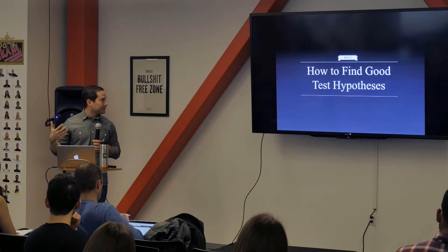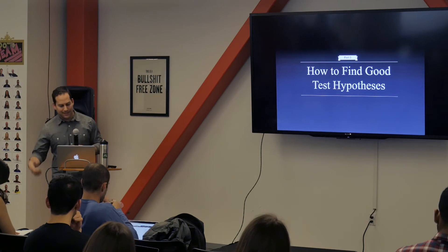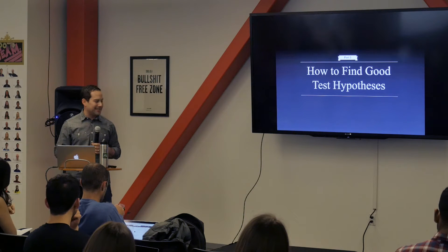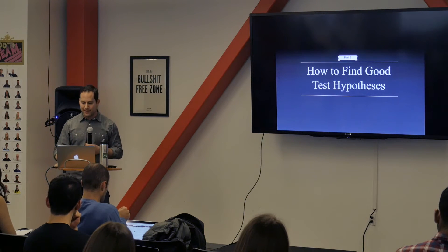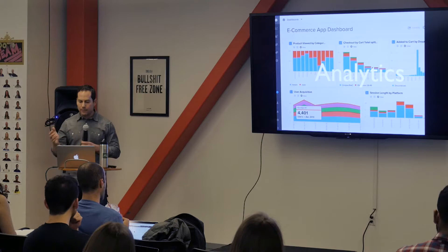So you've done your soul searching, asked yourself the hard questions, and you're ready to jump in and start testing. Here are a few ways to find good test hypotheses. First: analytics. Always start with your analytics. Set up your flows and funnels, find the underperforming elements in your funnel, and figure out how you can plug those leaky holes and unlock opportunities for growth.